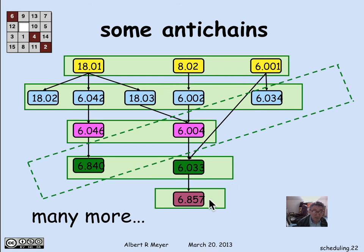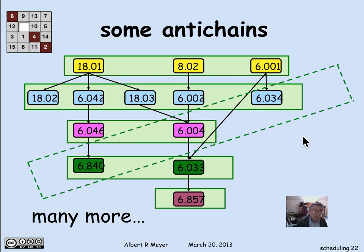The third, fourth, and fifth levels in our schedule are also anti-chains, but not all anti-chains appear as terms in our schedule. For example, there's a diagonal anti-chain: 6.840, 6.004, and 6.034 have no paths between them, so it's possible to take them simultaneously — you could take all their prerequisites first and then take those three together. An anti-chain means no path between any two members; in scheduling terms, it's possible to take them in the same term once all prerequisites are satisfied.